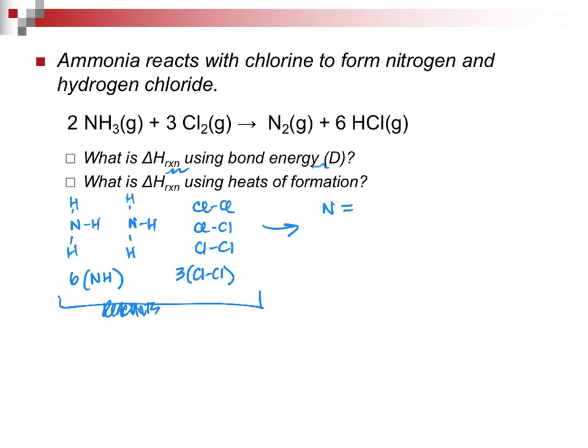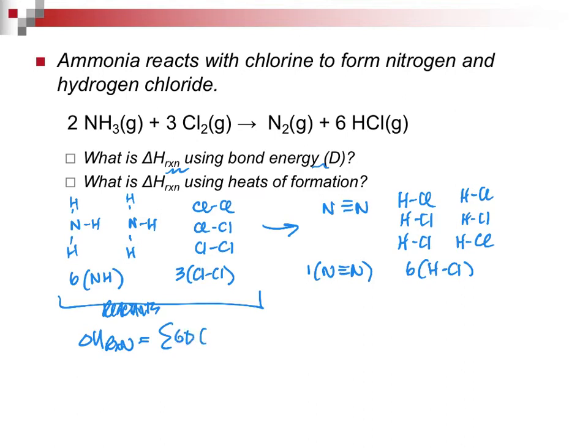These are for our reactants, and these are the bonds that are going to be broken. What I'm going to be making is nitrogen as a triple bond, and I'm going to be forming six HCl molecules. See, that's stoichiometry. It comes back to haunt you no matter what chapter we are in. So, when I look at this, I have one N≡N triple bond, and I have six HCl bonds.